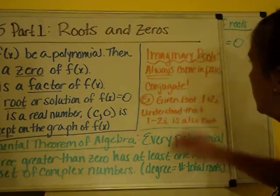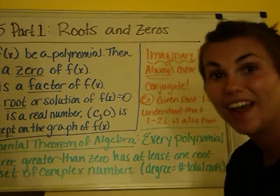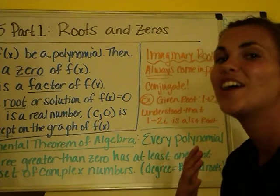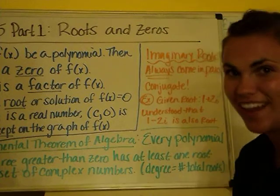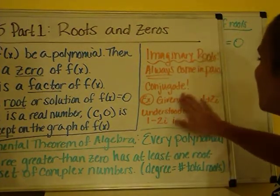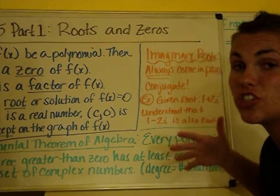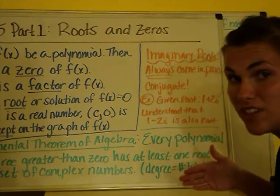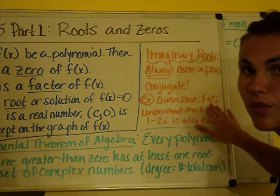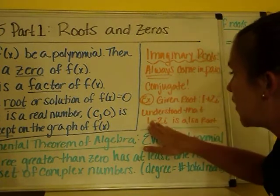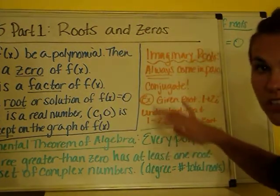On that note, if you have an imaginary root, imaginary roots always come in pairs, and the fancy word for those pairs is conjugate. So for example, if you're given that you have the root 1 plus 2i, then it's automatically understood that its conjugate, 1 minus 2i, is also a root. They work in pairs — that's our conjugates. Make sure you get it written down, hit the pause button.